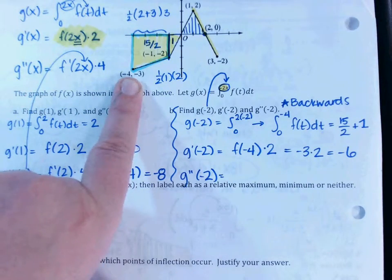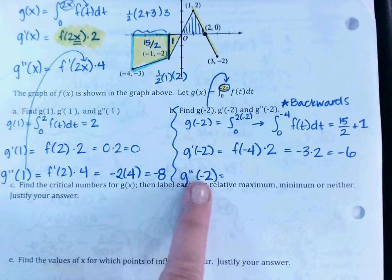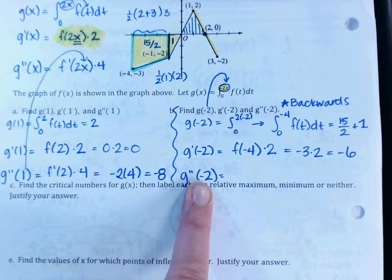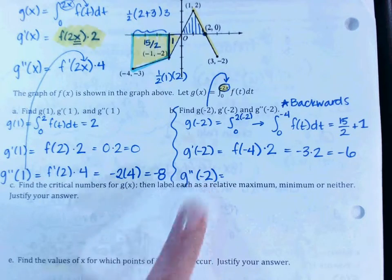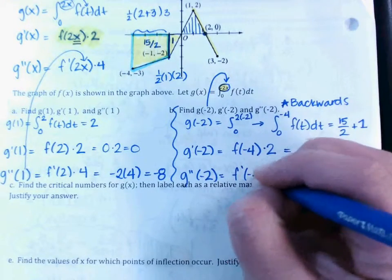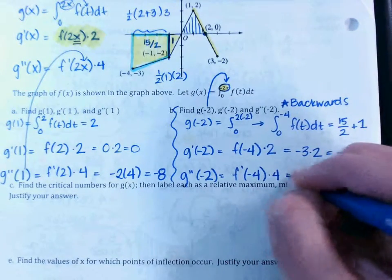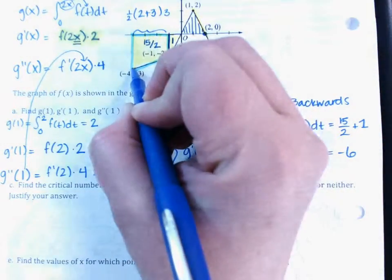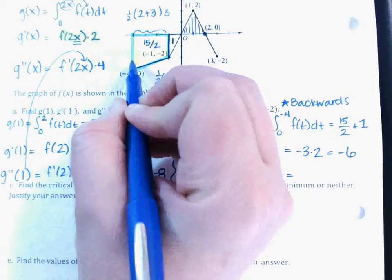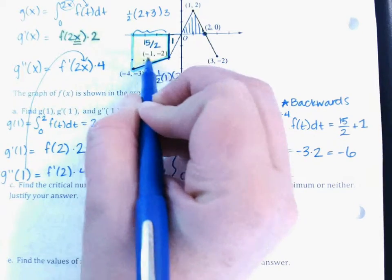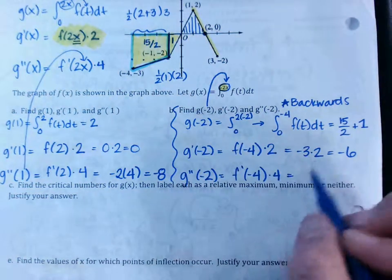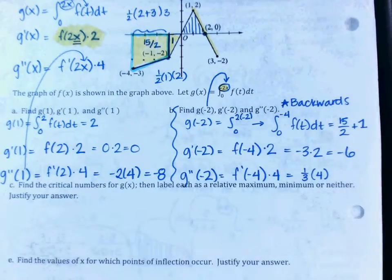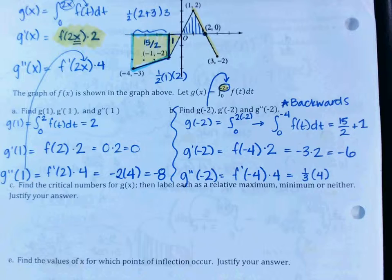For g''(-2): plug -2 into g''(x) = f'(2x)·4, giving f'(-4)·4. f'(-4) is the slope of the line segment at x = -4. Count rise over run: up 1 over 3, so the slope is 1/3. Therefore g''(-2) = (1/3)(4) = 4/3.